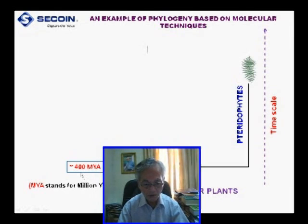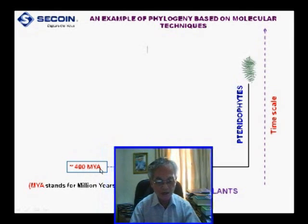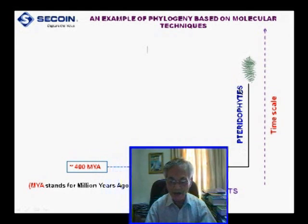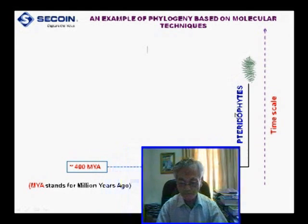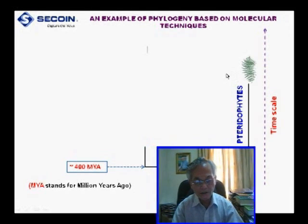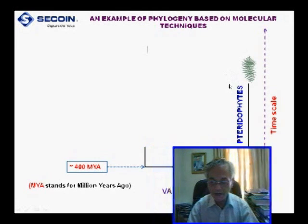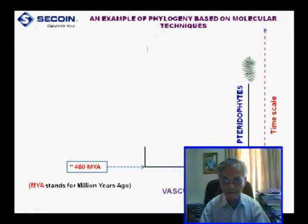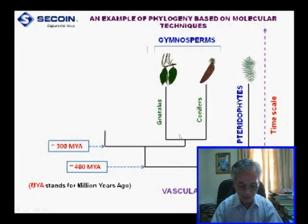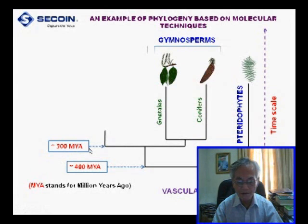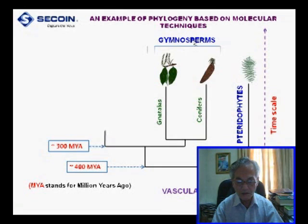From about 400 million years ago, the pteridophyte was born. Pteridophyte is a flowerless plant — for example, fern. From about 300 million years ago, the grey nettle and conifer were born. These belong to gymnosperm. Gymnosperm is a plant that has a naked seed.